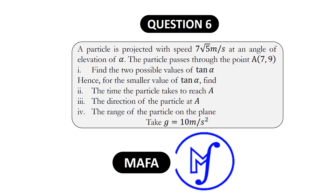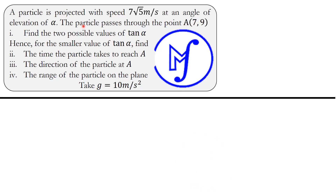The question reads: a particle is projected with speed 7.5 meters per second at an angle of elevation of alpha. The particle passes through the point A having coordinates (7, 9). Find the two possible values of tan alpha. Hence, for the smaller value of tan alpha, find: (i) the time the particle takes to reach A, (ii) the direction of the particle at A, and (iii) the range of the particle on the plane. Take g as 10 meters per second squared.